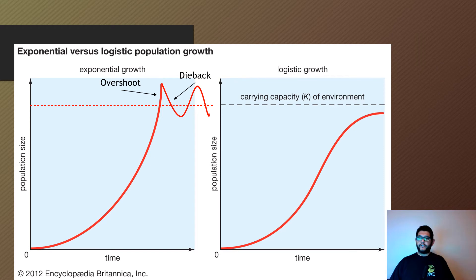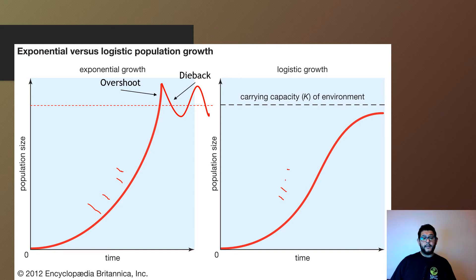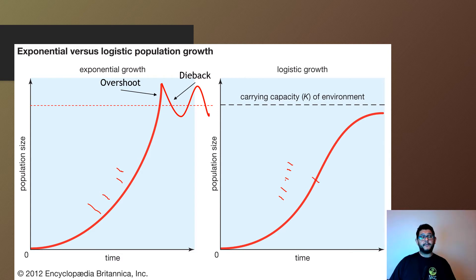Here we have our J curve and our S curve, which we mentioned in a previous video. As you can see, the population is growing really fast in these spots. On the right side, the logistic growth — you have a population that was growing fast, and then as they got to carrying capacity, reproduction slowed down and they eventually hit that line for carrying capacity.